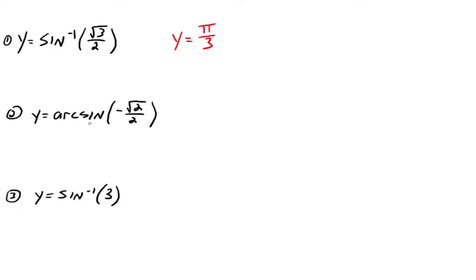What about y equals the arc sine of negative square root of 2 over 2? Remember, you're looking for a number between negative pi over 2 and pi over 2 whose sine is negative square root of 2 over 2. Picture the unit circle — you're looking at quadrants 4 and 1. The answer is negative pi over 4. You can't say 7 pi over 4 because 7 pi over 4 is not in the interval between negative pi over 2 and pi over 2. We're using negative angles here.